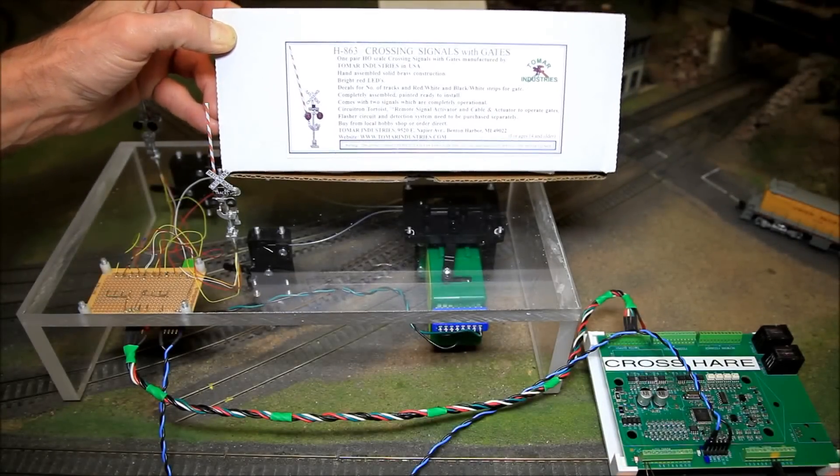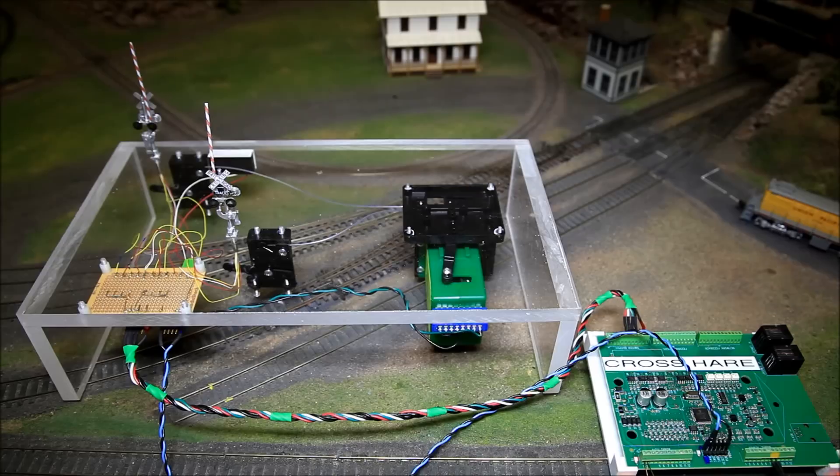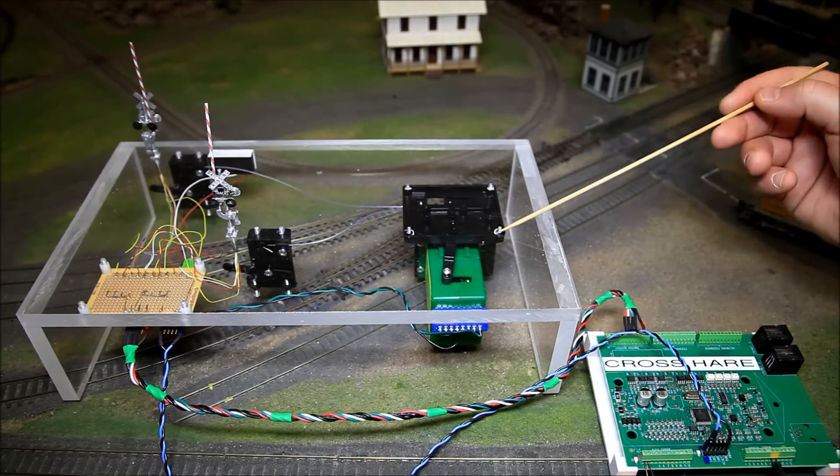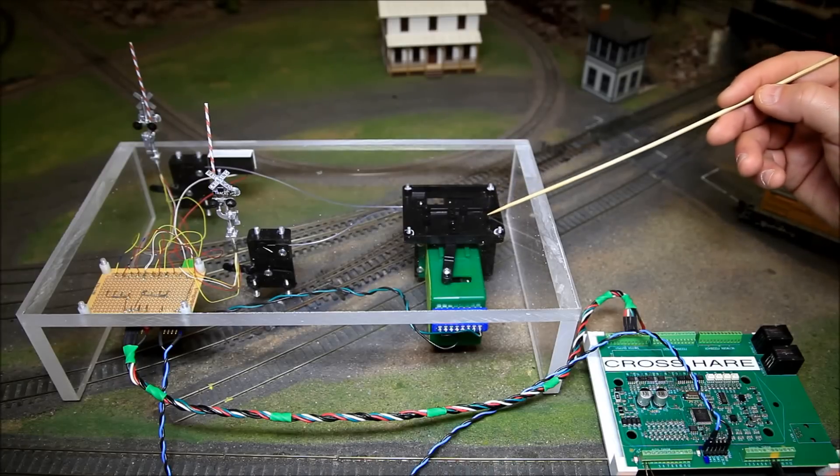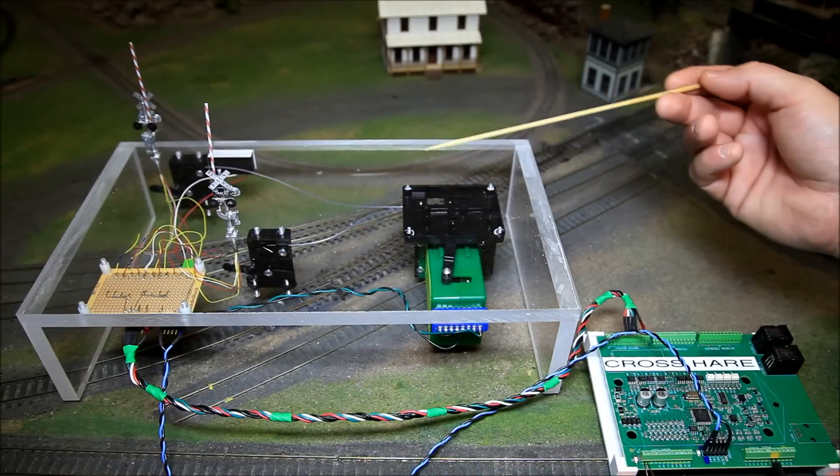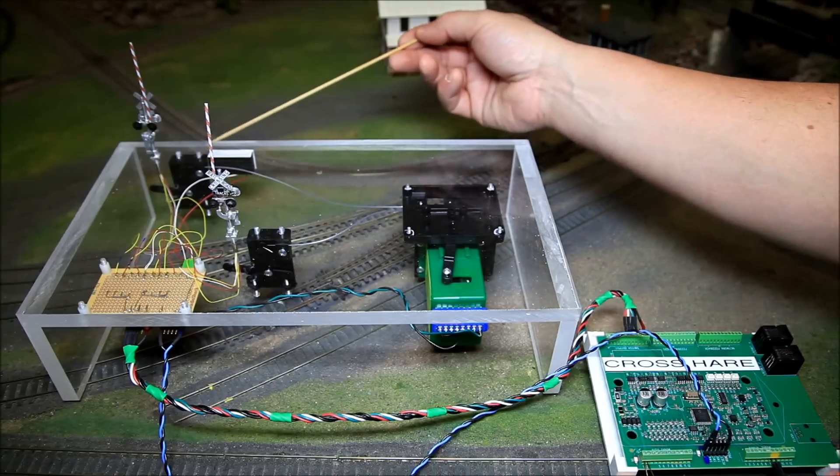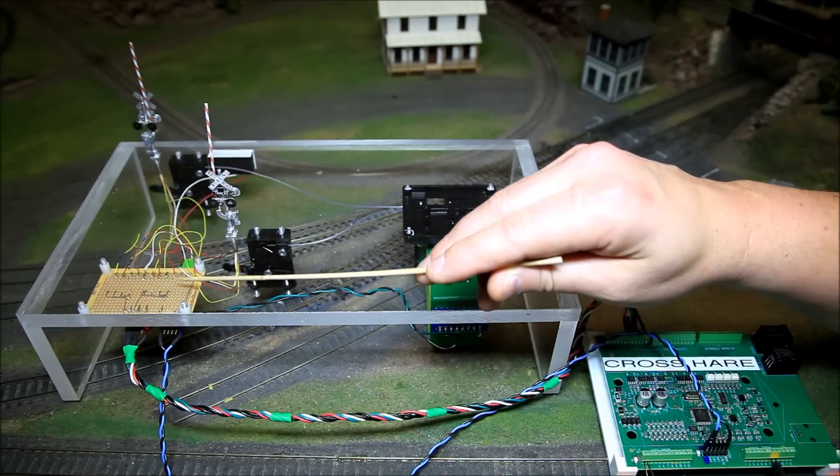The Tomar grade crossing kit consists of the two arms and the tortoise, the activator, as well as one actuator. We're also going to be adding a second actuator, speaker, and a board to mount your resistors.